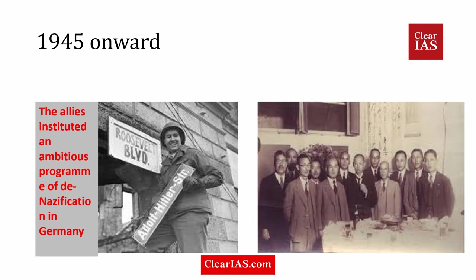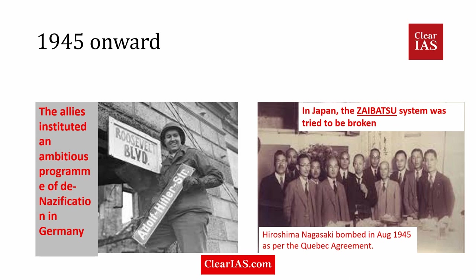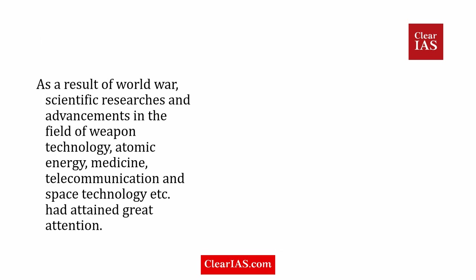Japan was also paying a penalty of sorts. Another initiative taken after World War II was the demolition of the Zaibatsu system — a Japanese term referring to industrially and financially vertically integrated business conglomerates — basically powerful influential people deciding Japan's future. Because they had a lot of influence on the Second World War, they were being broken down. Hiroshima and Nagasaki were bombed in August 1945 as per the Quebec Agreement. These are the key developments immediately after the Second World War.